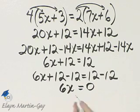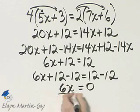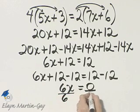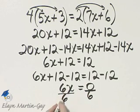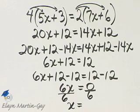We still want to solve for x. Let's divide both sides by the coefficient of x. The left side becomes 1x or simply x. And what is 0 divided by 6? Well, 0 divided by 6 is 0. The solution to this equation is 0.